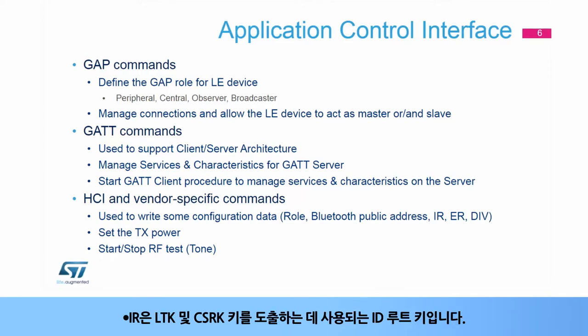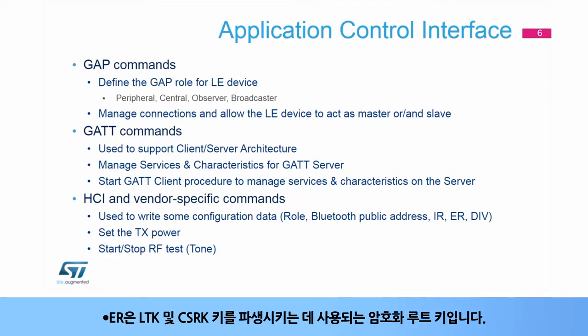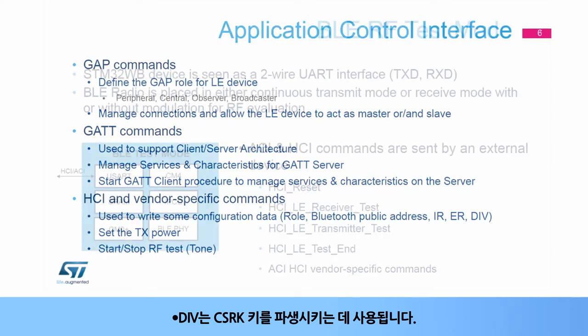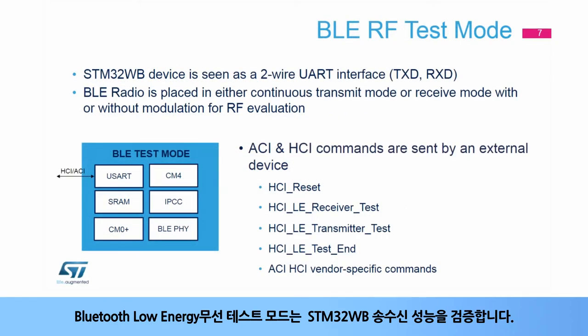IR is the identity root key used to derive the LTK and CSRK keys. ER is the encryption root key used to derive the LTK and CSRK keys. And DIV is used to derive the CSRK key.